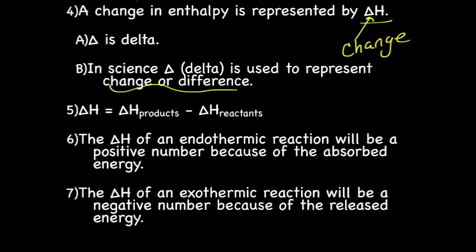Delta H equals the enthalpy of the products minus the enthalpy of the reactants. The delta H of an endothermic reaction will be a positive number because it's absorbing energy — the product molecules have greater energy than the reactant molecules. The delta H of an exothermic reaction will be a negative number because you're releasing energy.